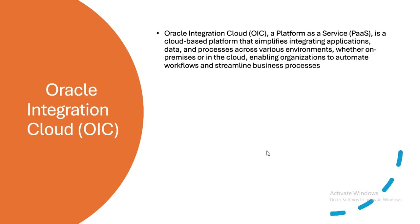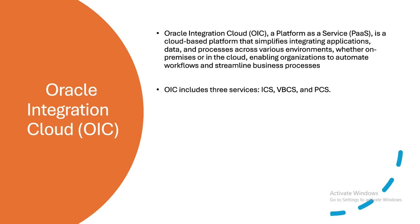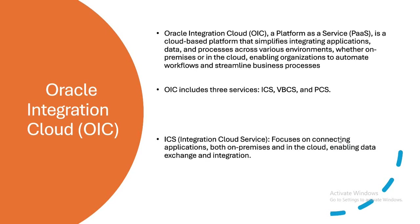Oracle Integration Cloud, or OIC, is a Platform as a Service, which is PaaS, and it is a cloud-based platform that simplifies integrating applications, data, and processes across various environments — that can be on-premises or in the cloud. It helps organizations to automate workflows and streamline business processes. OIC provides three services: ICS, VBCS, and PCS.